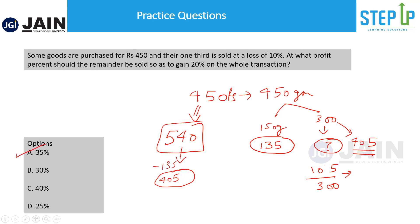With this question, we end the profit, loss and discount chapter. You should now feel very confident applying the SP by CP approach. I promise you, if you practice a lot of questions using this method, you can attempt these questions in 10 to 15 seconds. Thanks for watching the video and I look forward to seeing you in future videos.